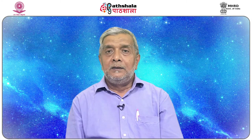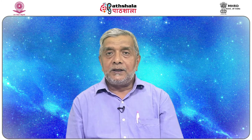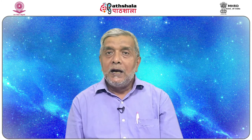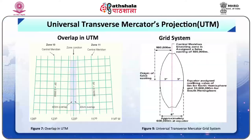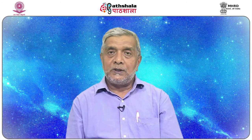There are special UTM zones between 0 and 36 degrees latitude, above 72 degrees latitude, and a special zone 32 between 56 and 64 degrees north latitude. Figure 9 shows the Mercator's grid system for northern and southern hemispheres. For areas beyond 80 degrees south and 84 degrees north, the Universal Polar Stereographic (UPS) projection is used.